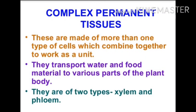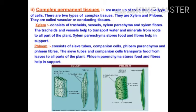Now the other type of permanent tissue: complex permanent tissues. These are made up of more than one type of cell which combines together to work as a unit. They transport water and food material to the various parts of the body. There are two types of complex permanent tissue: one is xylem and the second is phloem. Xylem consists of tracheids, vessels, xylem parenchyma and xylem fiber.